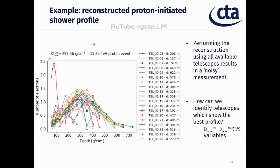This is an example of reconstructed profiles corresponding to one event generated by a proton of 11 TeV. In this plot you can see the different profiles reconstructed by telescopes at different distances. In principle we expect all these profiles to be at the same height, but as you can see some of them — for example this red profile — do not match the behavior of the others. This means that performing the reconstruction using all available telescopes can result in a noisy measurement, so we need to identify those telescopes that produce the best reconstruction.